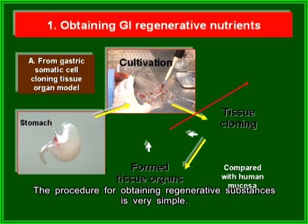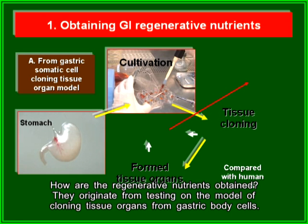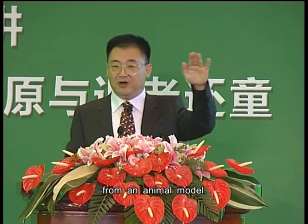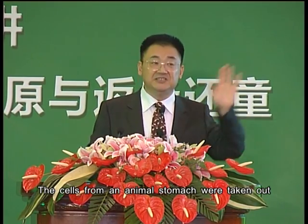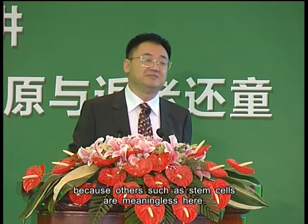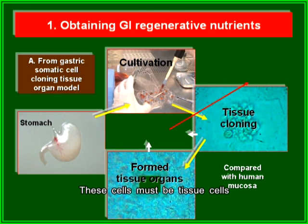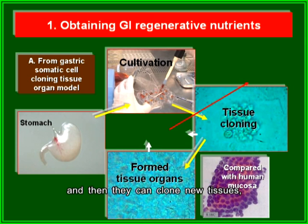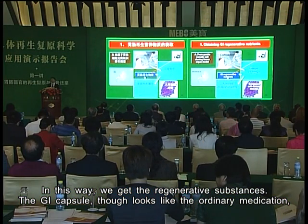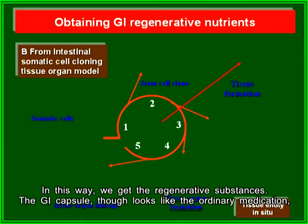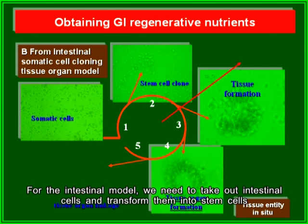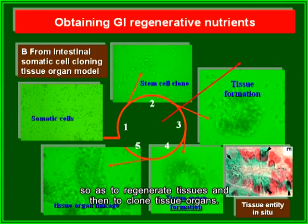The procedure for obtaining regenerative substances is simple. They originate from testing on the model of cloning tissue organs from gastric body cells, from an animal model. Cells from an animal stomach were taken out and cultured directly — only stomach tissue cells were used rather than others, because stem cells alone are meaningless here. These tissue cells are transformed into stem cells, which can then clone new tissues just like the mucosa of human beings, and in this way we obtain the regenerative substances.